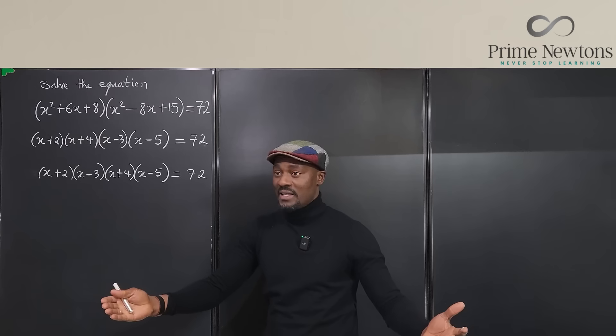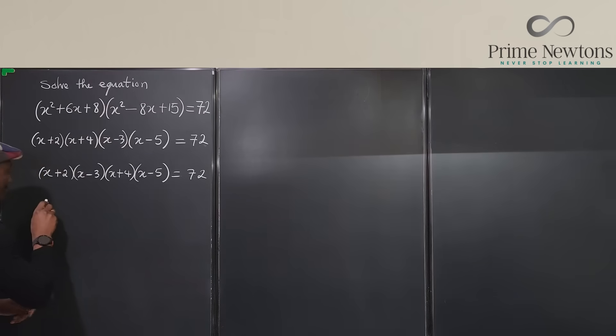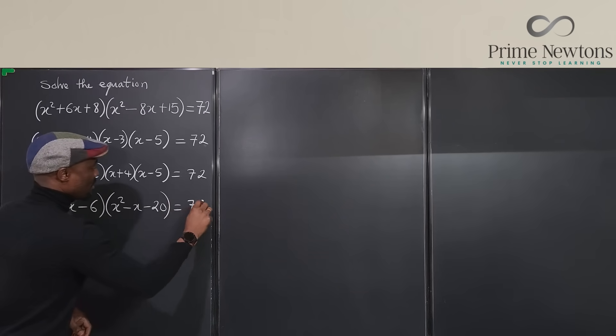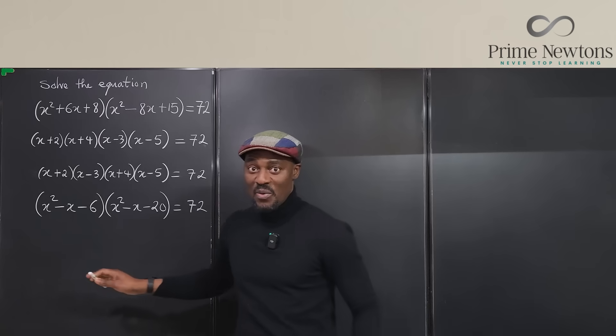We're going to get different quadratics, but that would help us solve this because now we're going to have x squared. So if we multiply these two, we have x squared. We're going to end up with minus x minus six. That's the first quadratic. The second quadratic is going to give us x squared plus four x minus five x is minus x minus 20 equals 72. Notice how I have not touched the 72 on the right hand side.